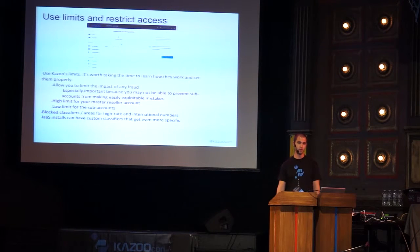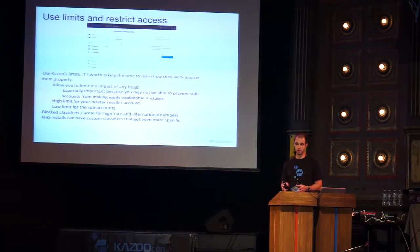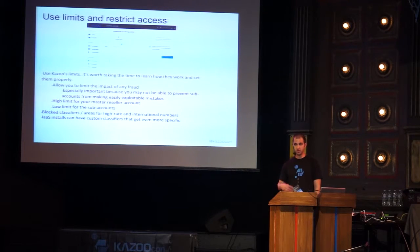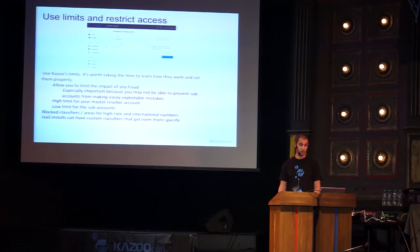Again, use limits — using limits is going to allow you to mitigate the effects of any attack, specifically sub-accounts. If a sub-account is compromised, you want to make sure that the limit is low enough so that it doesn't cost a ton of money. You can't always prevent sub-accounts from making easy mistakes, so it's important to limit the potential impact. Blocking classifiers are another great idea — high rate and international numbers, you can block them if you're not expecting to make any international calls. Infrastructure-as-a-service installs have even more detailed classifiers that can allow you to restrict things even better.